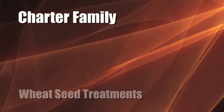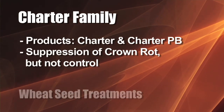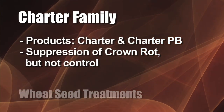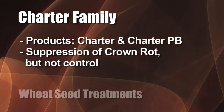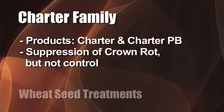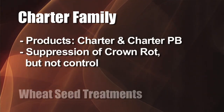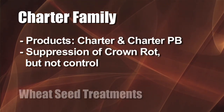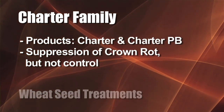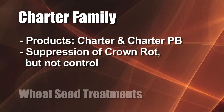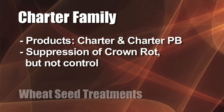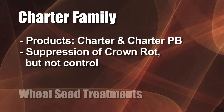Let's start with Charter — it's a good product, and there's also Charter PB. Charter does have an issue with crown rot: it provides suppression but not really control, and that's where we run into issues. In a first-year wheat situation there are really no problems — Charter has been an excellent product. Even in a continuous wheat situation, early season you're going to have suppression on crown rot, but it could be an issue later in the season.